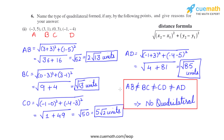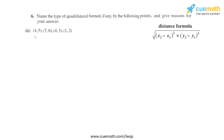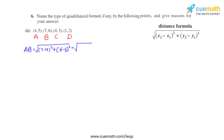Now let's do the third part using the same steps. Label the points A, B, C, D and find the sides. For AB: (7 minus 4) whole square plus (6 minus 5) whole square = (3)² + (1)² = 9 + 1 = 10, so AB = √10 units.